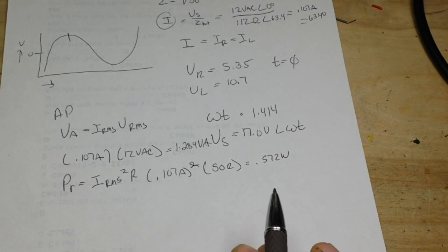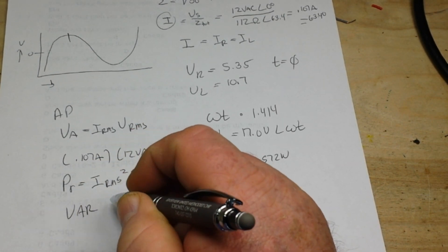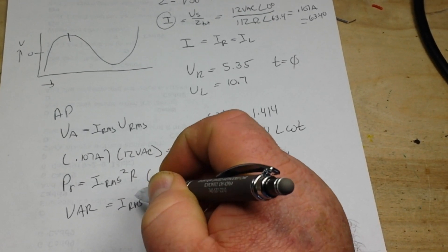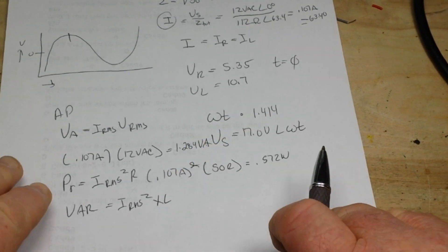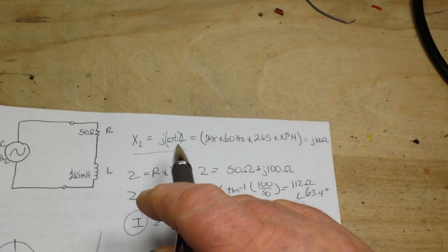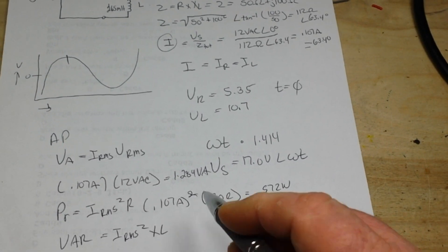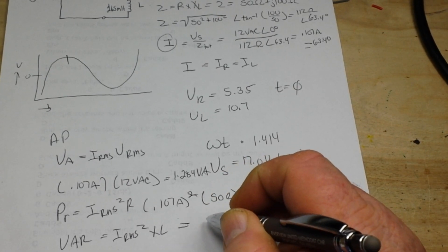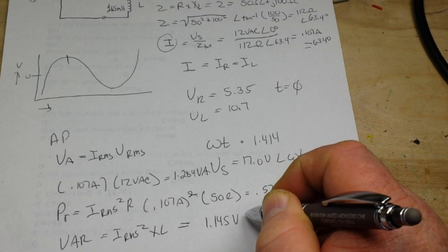The reactive power of the inductor, which is called VAR, is equal to our current RMS squared times XL, our inductive reactance which we figured out up here. And we do that formula and we're going to come out with 1.145 VA.